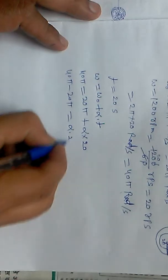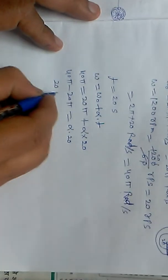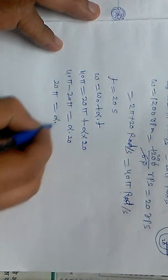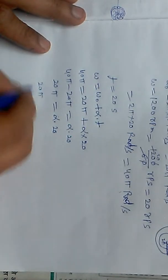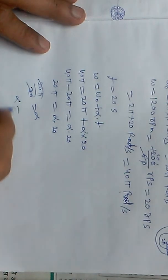That equals alpha times 20. 20 pi equals alpha times 20. Divide both sides by 20.